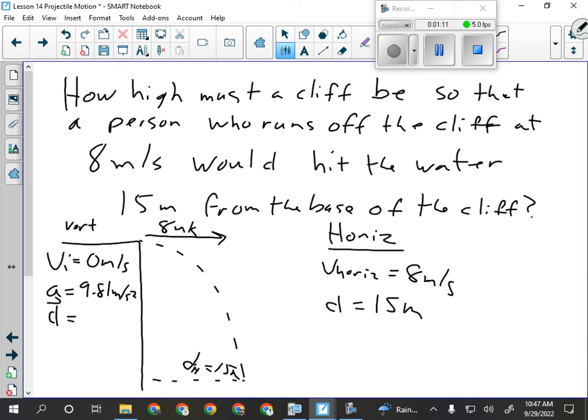What do I need? Time. Can I find it with my horizontal information? Yes. Because horizontally we always use V equals D over T. So T will equal D over V, 15 meters divided by 8 meters per second.